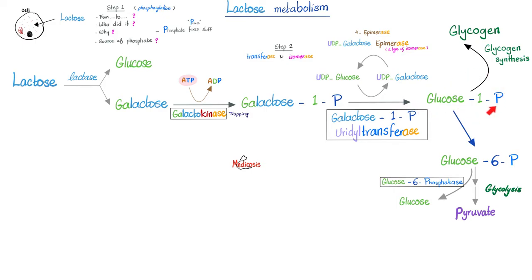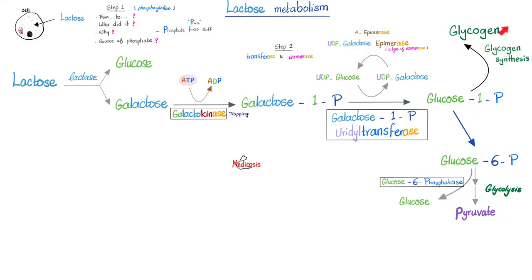After that, what do we do with glucose-1-phosphate? If you are in a state of abundance, you can save it for later — store it as glycogen, which is a very large sugar. But if you need energy right now, glucose-1-phosphate can become glucose-6-phosphate and then go through glycolysis to give you ATP. You can use it for now, or save it for later.